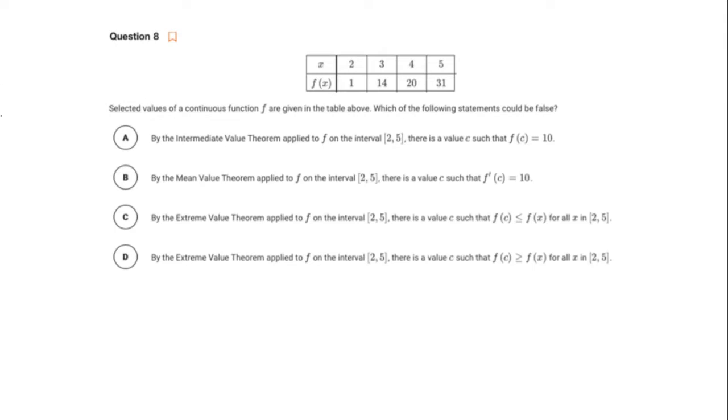Part A: by the intermediate value theorem applied to f on the closed interval from 2 to 5, there's a value of c such that f of c is 10. Well, let's see what that looks like. So if I were to draw this: at 2, f is 1. At 5, f is 31.